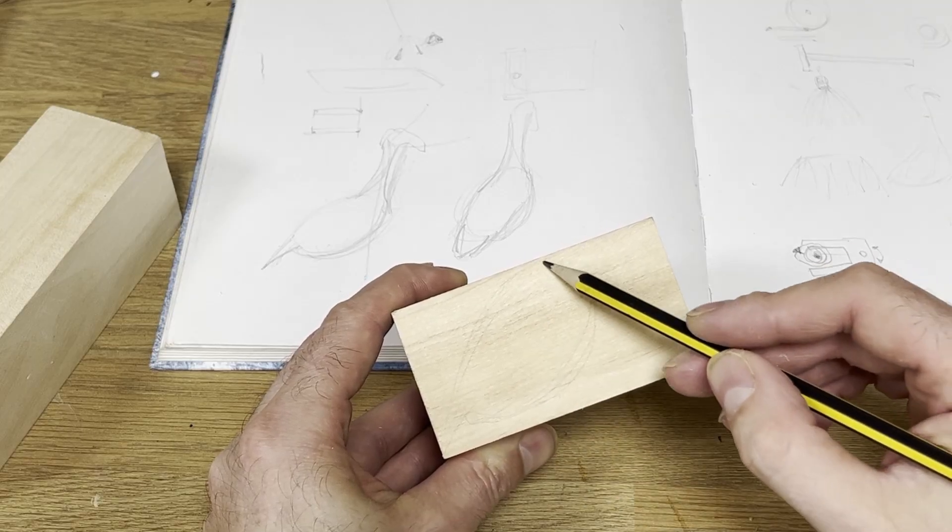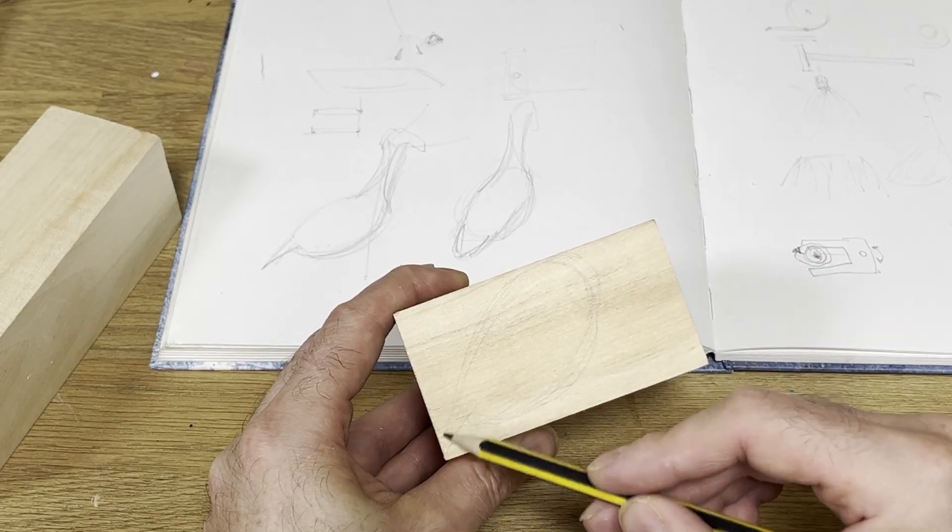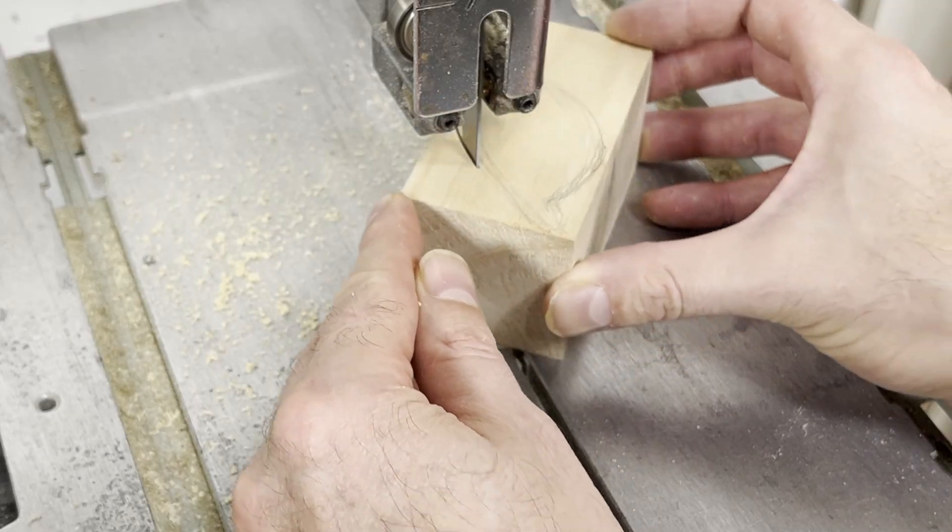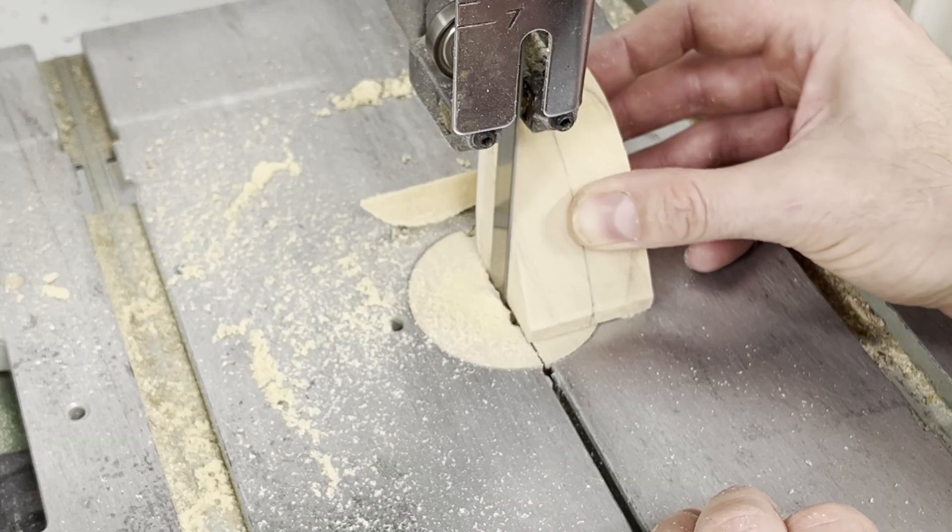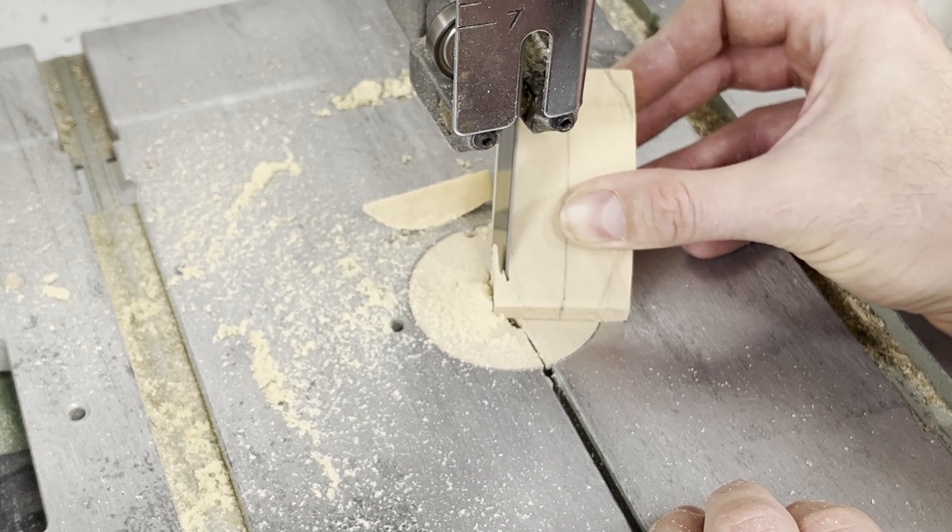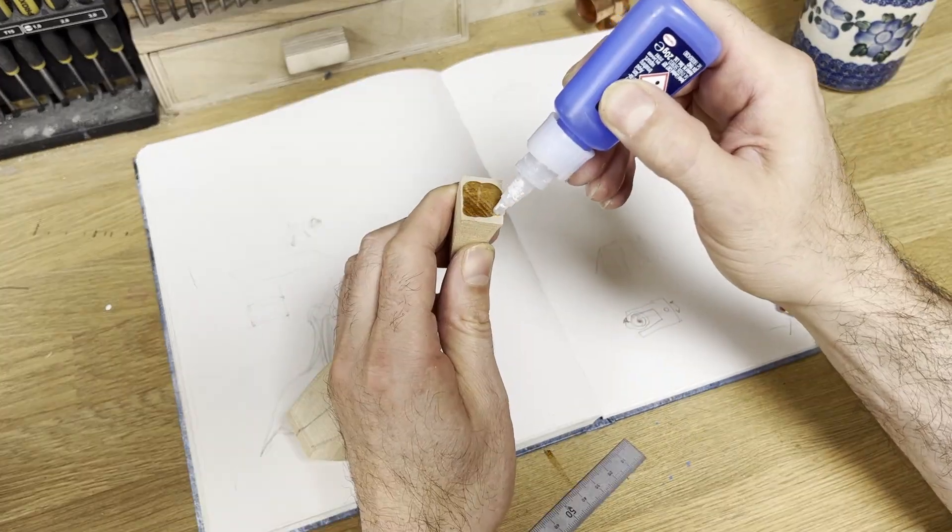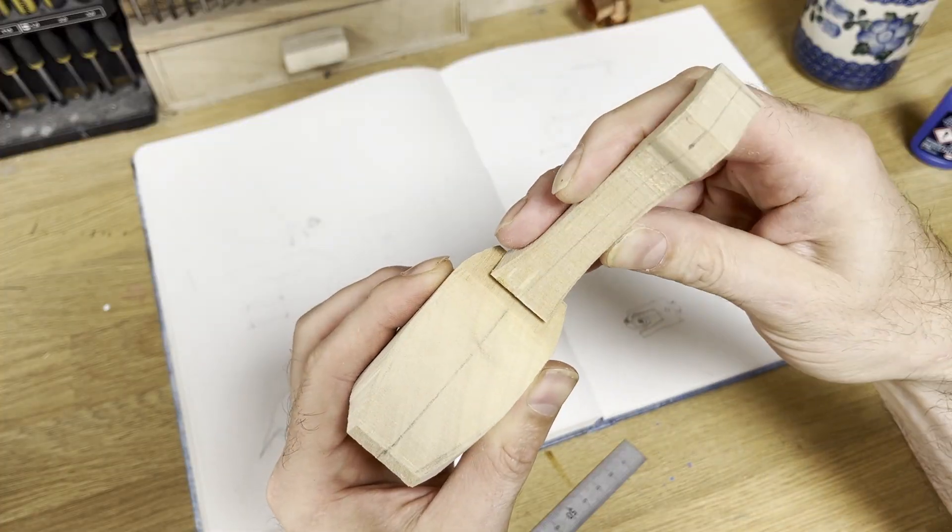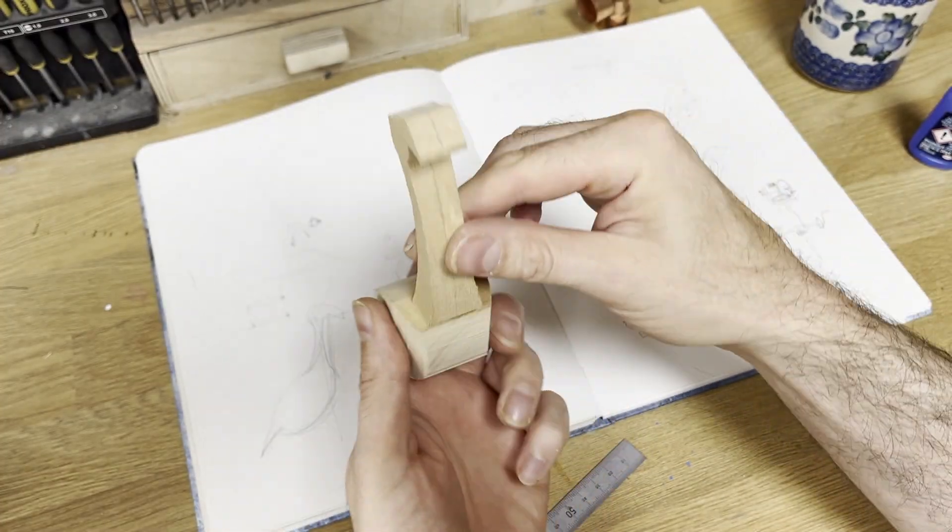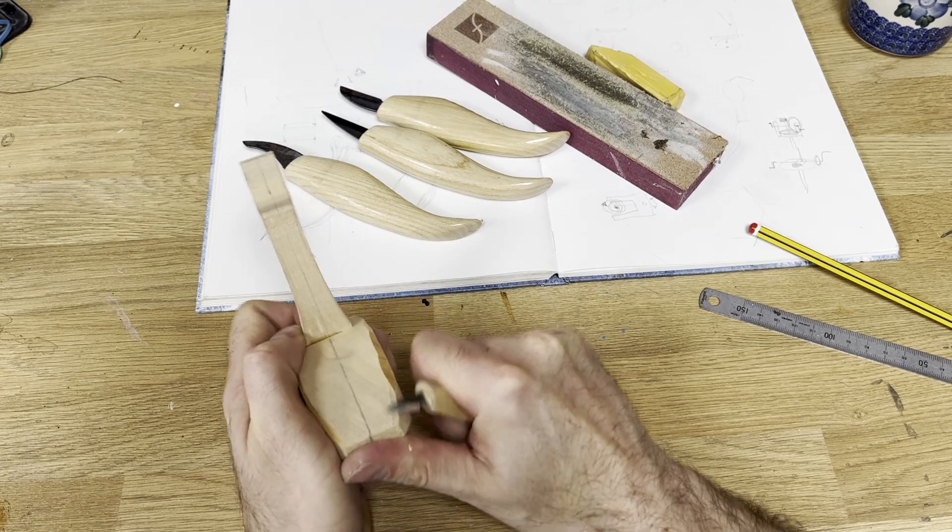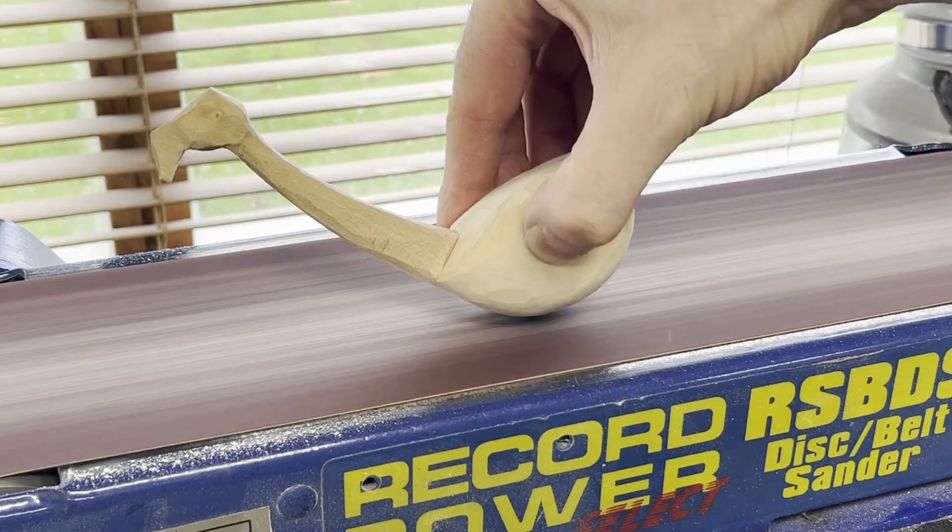First step was to sketch out an outline of the flamingo using limewood. I studied its courting dance posture carefully and wanted to capture the way it holds its head and body in a long elegant, almost regal stretch. I cut out the basic shape and use a mix of methods when shaping my models: belt sanding, carving knives, whatever feels right.